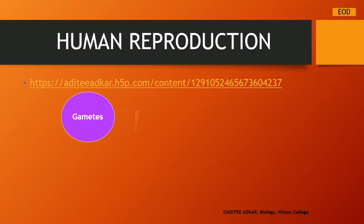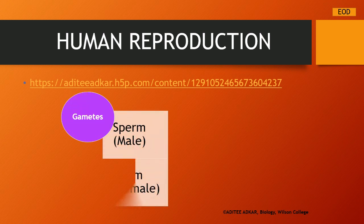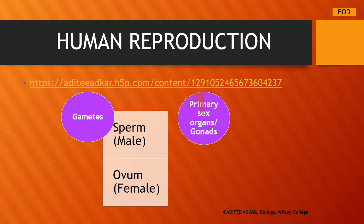As we further study human reproduction, let us clear a few basic concepts. The gametes in human beings are of two types: the male gamete known as the sperm and the female gamete known as the ovum. These gametes or sex cells are produced by organs called primary sex organs or gonads. The male gonad is called the testis and the female gonad is called the ovary. Females have a pair of ovaries and males have a pair of testes.